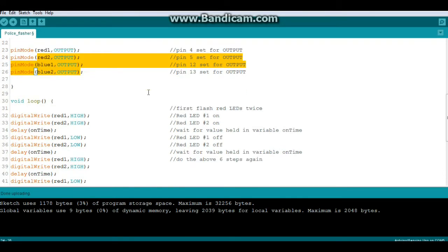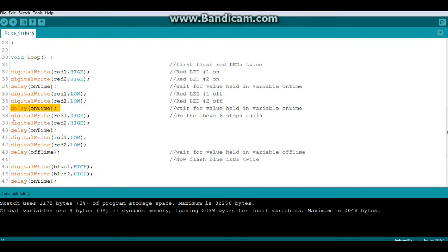All right, now we're going to start our flasher and it's going to flash the red LED twice first. So we write our two LEDs high, that turns them on. We wait for our onTime and then we digitalWrite them low. That turns them off. We wait for our onTime again and then we repeat, and that gives us our two flashes. Then we delay for our offTime which is half a second.